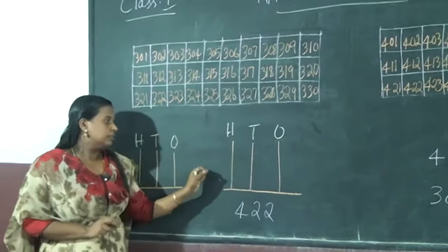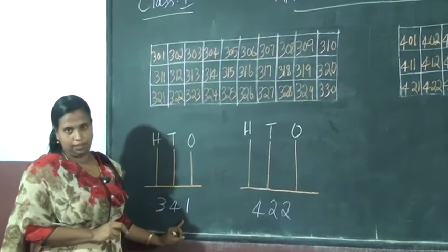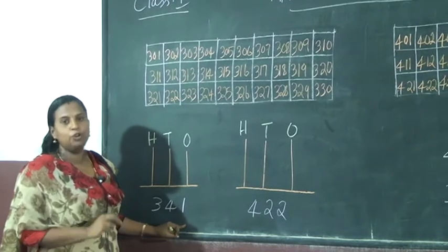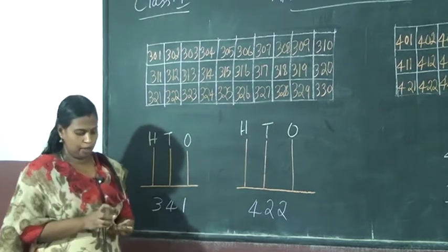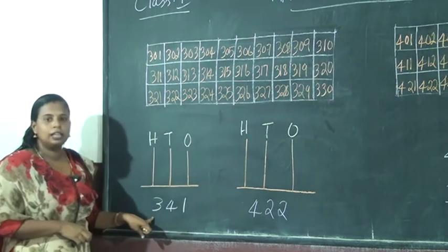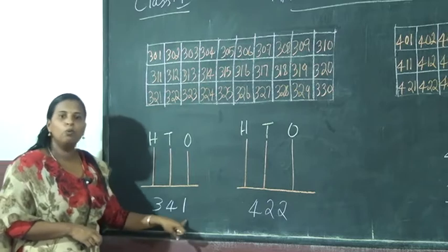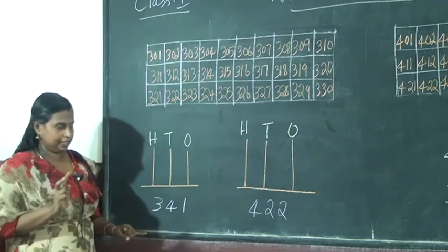Okay, then some questions given. Some numbers given. You draw abacus. Abacus draw. Okay, are you ready? First number, 341. How many digits in this number? 3 digits. Are you ready?